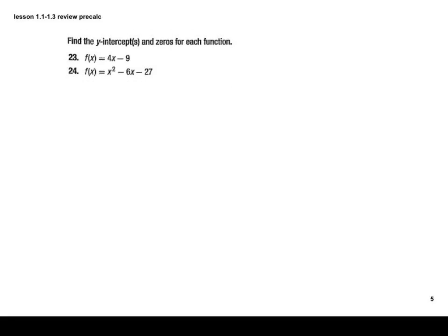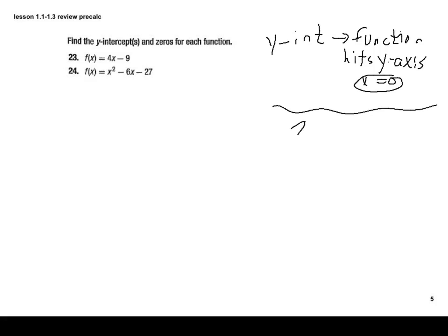Now for these problems, we're going to be looking for the y-intercepts and for the zeros of a function. A y-intercept is where the function hits the y-axis, so it's technically where x is equal to zero. Now the x-intercept, which is actually another term for the zero of a function, is where the function hits the x-axis. So in this particular case, it's where the function equals zero. So those are the things we have to keep in mind when we're finding those two things.